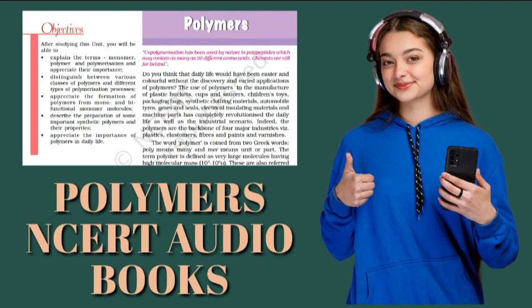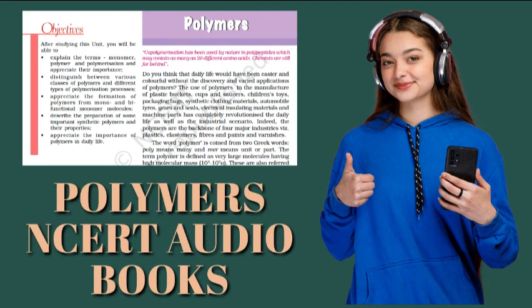Second, Nylon 6. It is obtained by heating caprolactam with water at a high temperature. Nylon 6 is used for the manufacture of tire cords, fabrics and ropes. Second, polyesters. These are the polycondensation products of dicarboxylic acids and diols. Dacron or terylene is the best known example of polyesters. It is manufactured by heating a mixture of ethylene glycol and terephthalic acid at 420 to 460 K in the presence of zinc acetate and antimony trioxide catalyst.